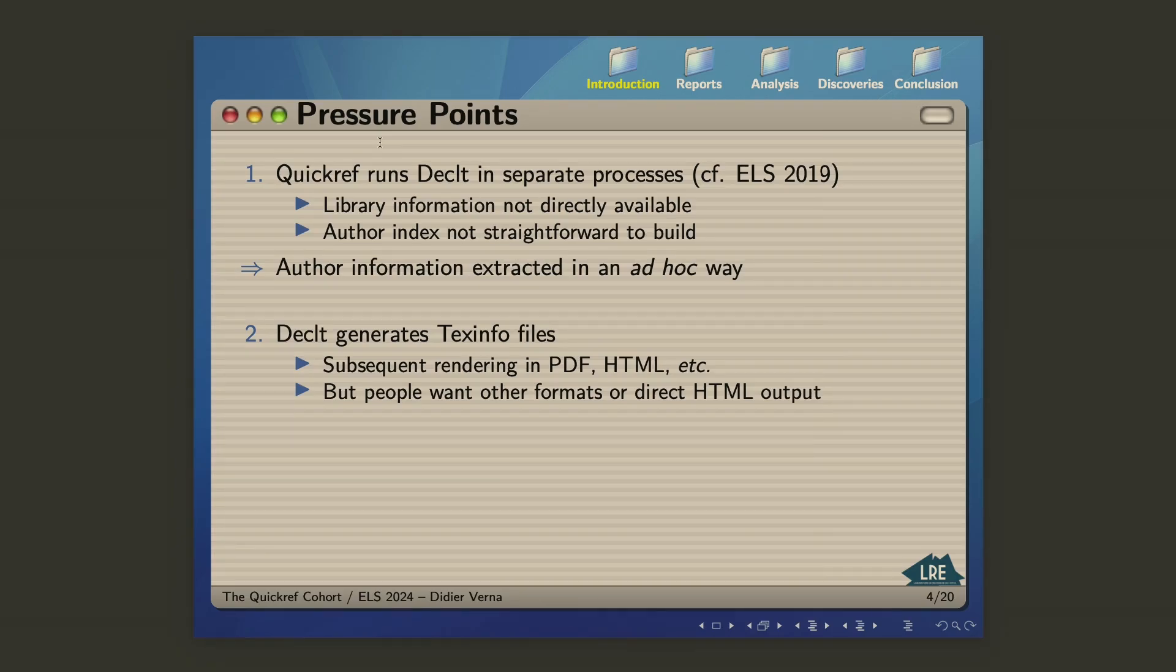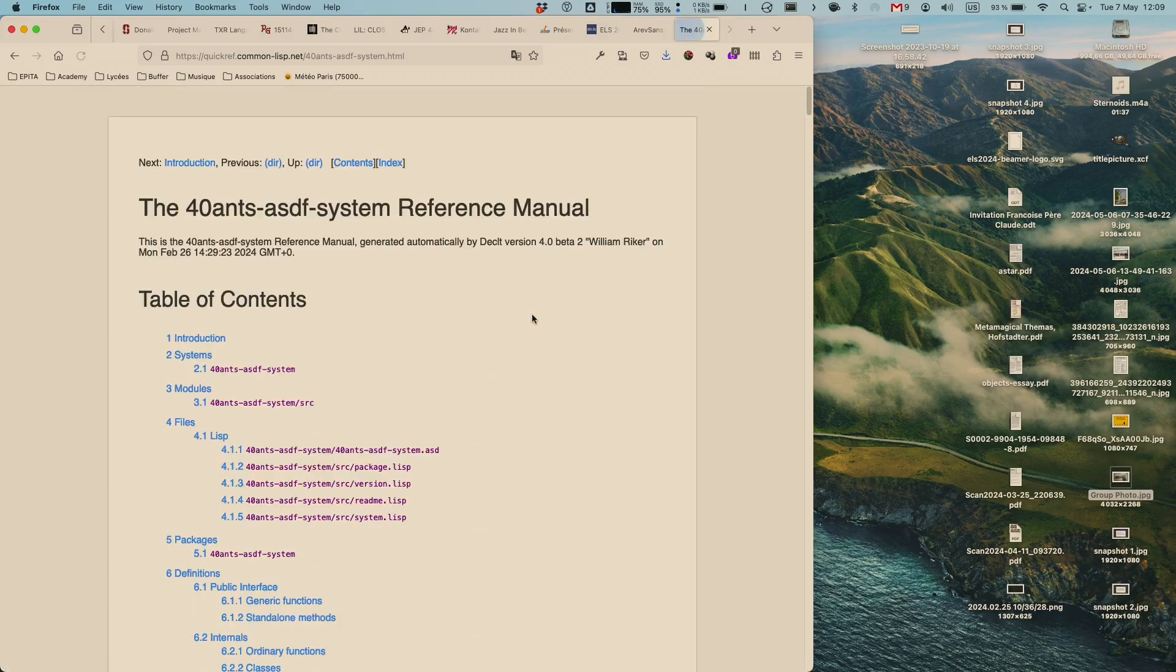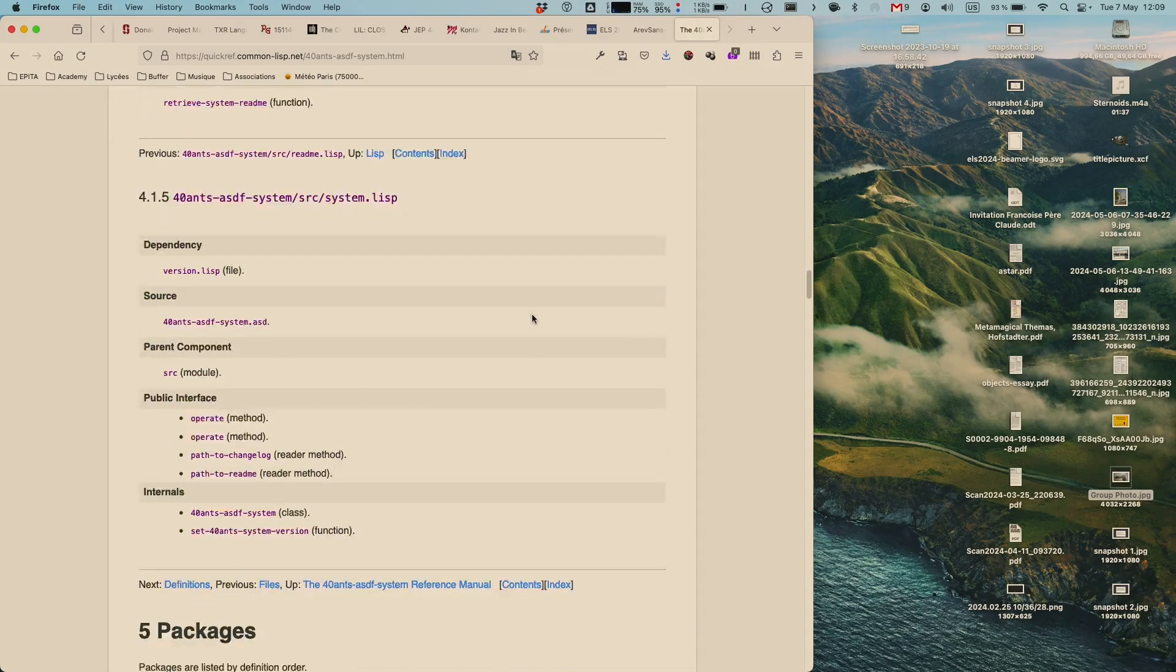The second pressure point that I feel, and I've been feeling that for a number of years now, is an external one. Originally, and that is still the case today, DECLET generates reference manuals in the TechInfo format, which is a format which I like. I've been using it for 20 years, and actually it's a format which is quite well suited to reference manuals. It's not human readable, but it's an intermediate format from which you can generate HTML, PDF, and a number of other things.